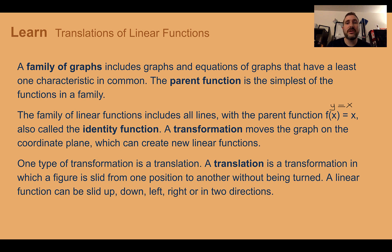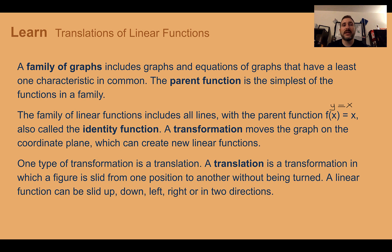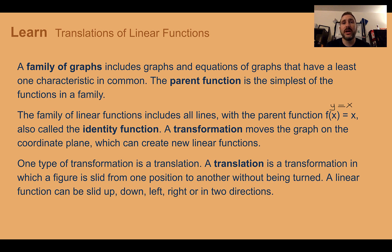A transformation — meaning you're changing it somehow — is going to move the graph on the coordinate plane, which creates new linear functions. They might be steeper, flatter, flipped, or moved up, down, left, or right. Those are your transformations. The first type is called a translation — a transformation where you slide a figure from one position to another without turning it. You can slide it up, down, left, or right, but the line never gets steeper or flatter.